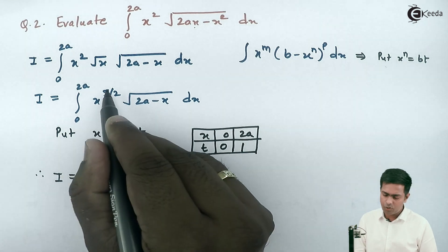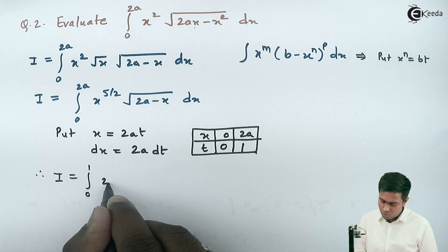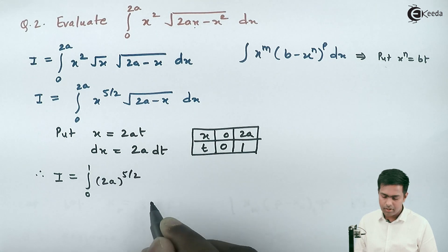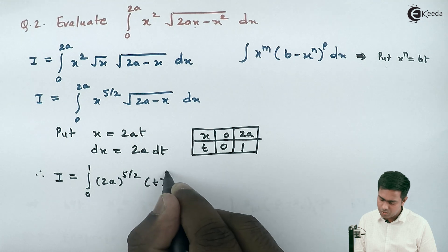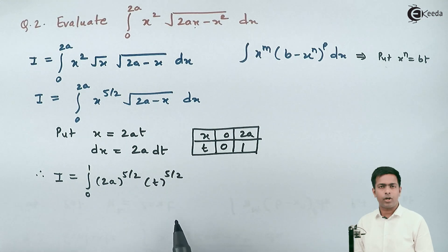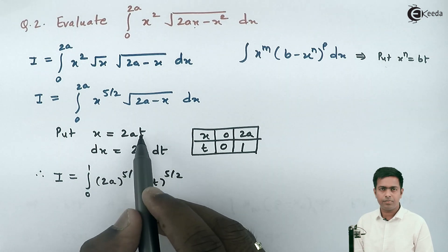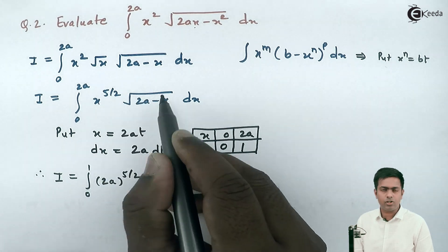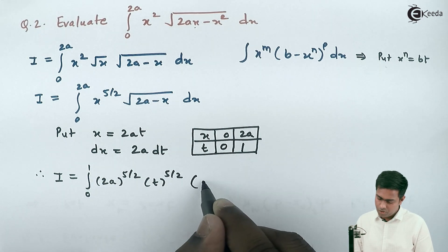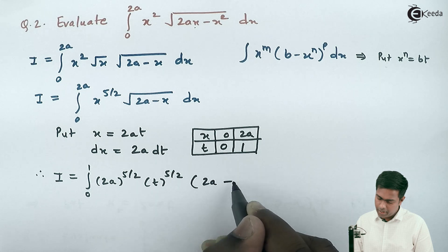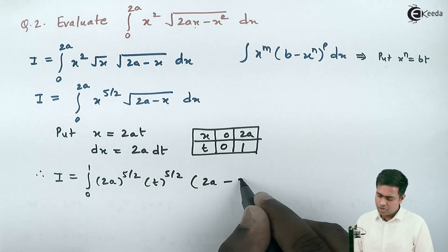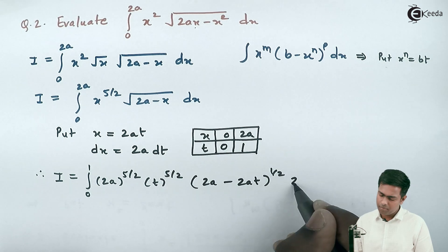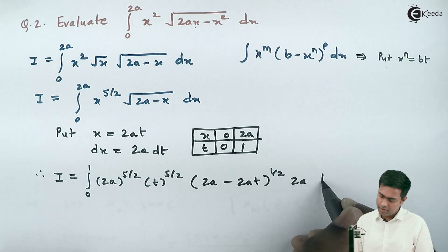After substitution, x raised to 5/2 becomes (2at) raised to 5/2, giving 2a raised to 5/2 times t raised to 5/2. Similarly, the square root term (2a minus x) raised to 1/2 becomes (2a minus 2at) raised to 1/2, and dx becomes 2a dt.